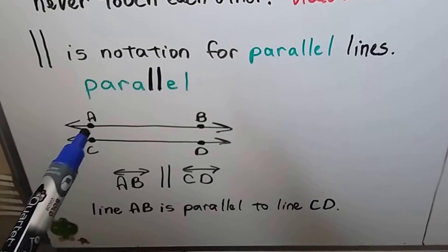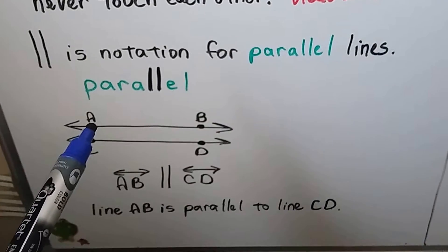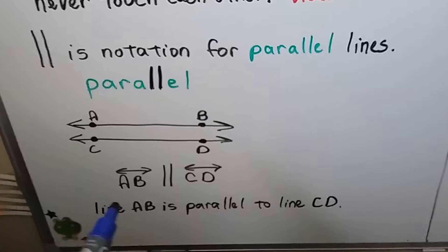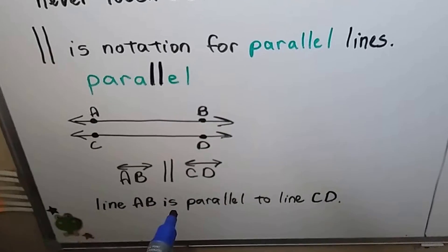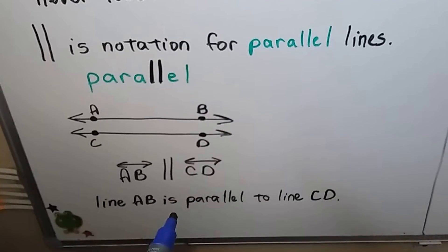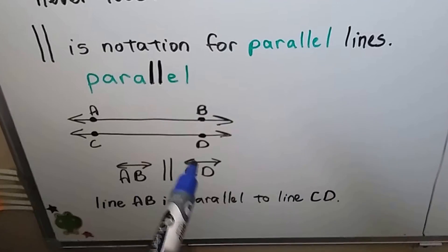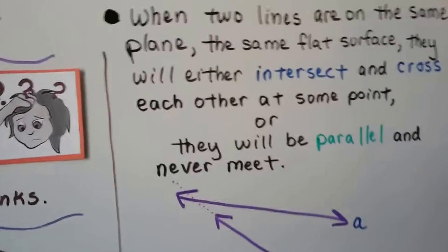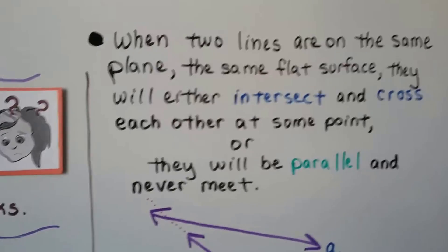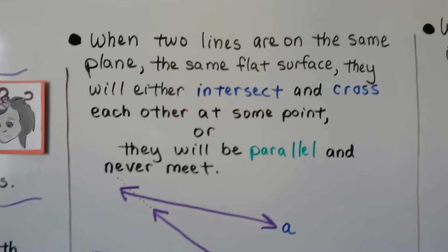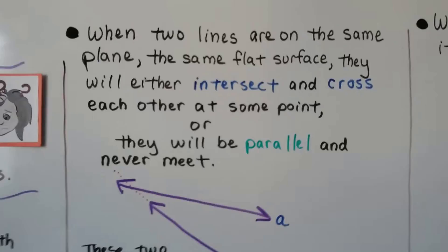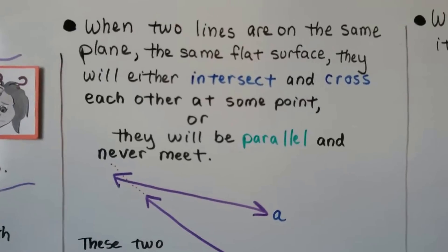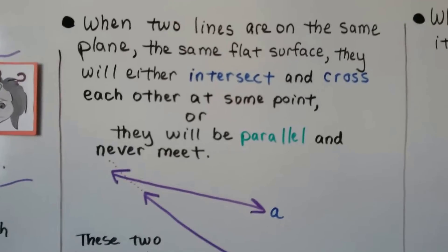In this diagram, we have line AB and line CD. We can write it like this: line AB is parallel to line CD. That would be the notation. When two lines are on the same plane — the same flat surface — they will either intersect and cross each other at some point, or they'll be parallel and never meet.